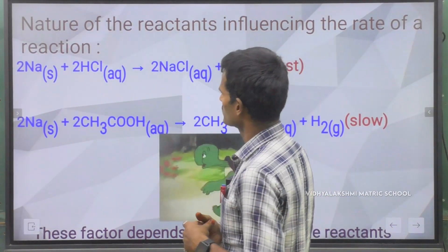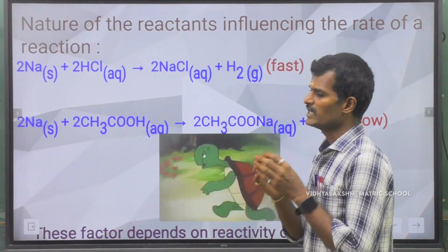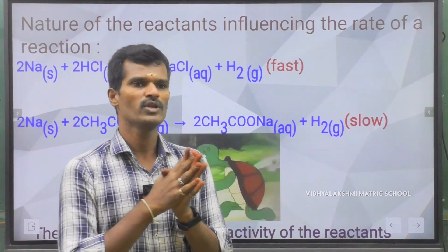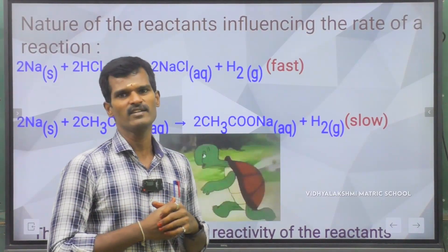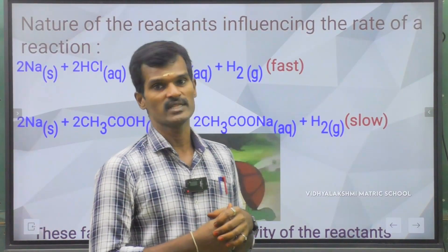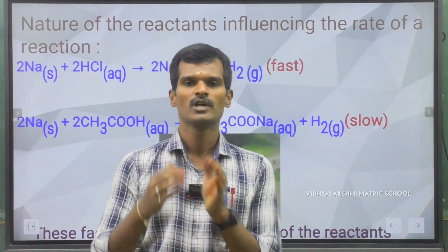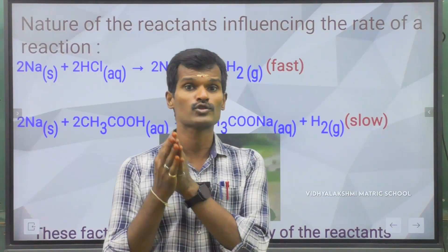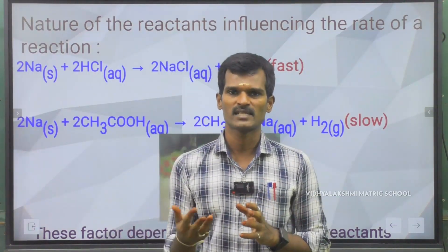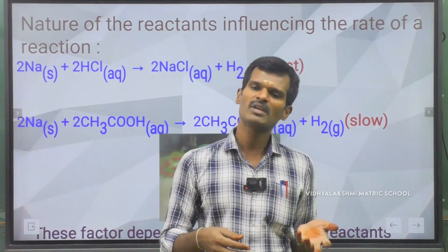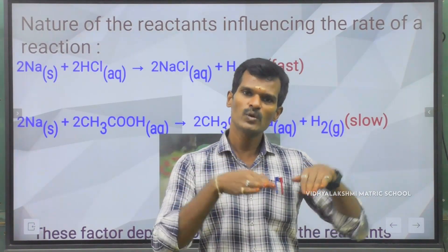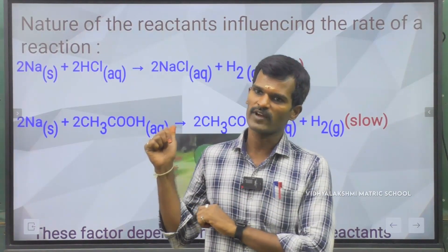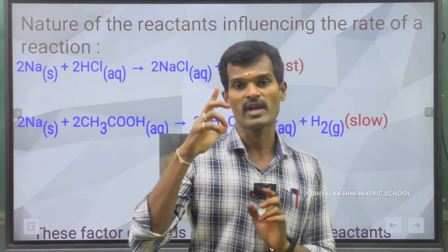Nature of the reactant is based on the strength of the process. We know from our ninth standard, in the acid, base, and salt lesson, we learned about strong and weak. Easy to ionize means strong; slowly to ionize means weak. Based on that, we finalize the nature of the reactant.